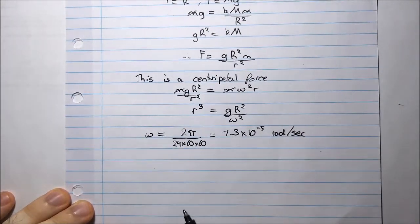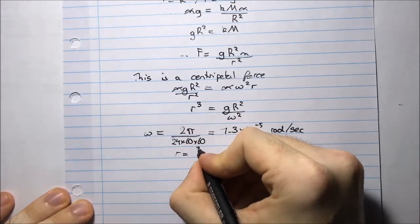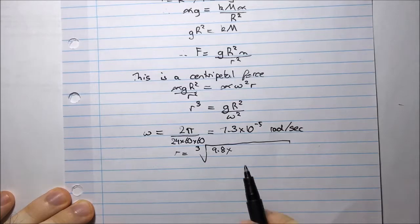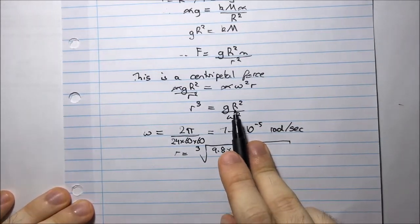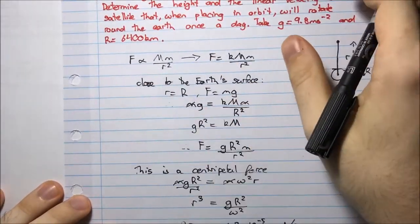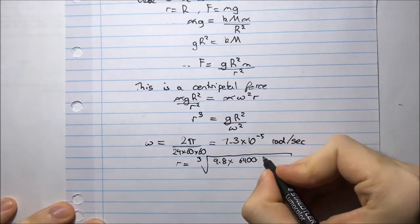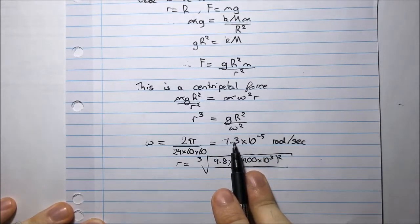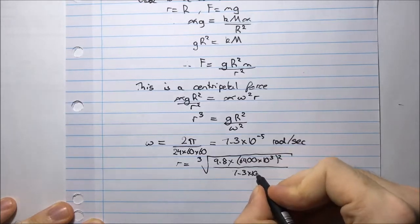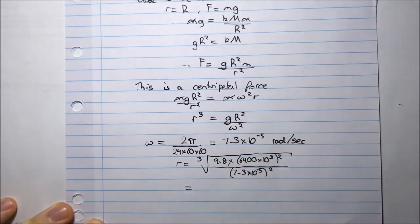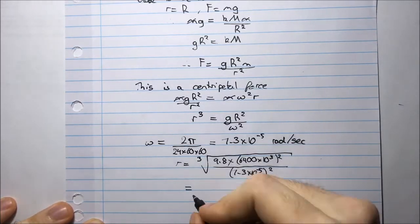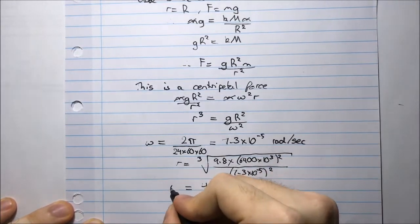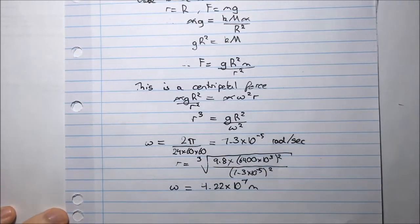So now I can substitute that value into here and work out what R is. So R is going to be the cube root of g, which is 9.8 meters per second squared. If this is meters per second squared, I need my capital R in meters as well. I'm given it in kilometers, so all I have to do is multiply by a thousand. So 6400 multiplied by 10 to the 3 squared, divided by 7.3 times 10 to the negative 5 squared. And that should give me 4.22 times 10 to the 7 meters.